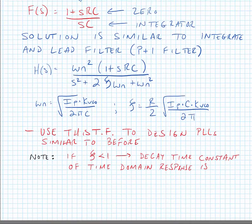Last thing I want to note for today is that if zeta is less than 1, the decay time constant in the time domain response—remember before we had some exponential response with a time constant proportional to resistance and capacitance. Well, in the charge pump PLL, we see the same type of behavior. This time our time domain decay constant, tau decay, is equal to 1 over zeta times omega N.